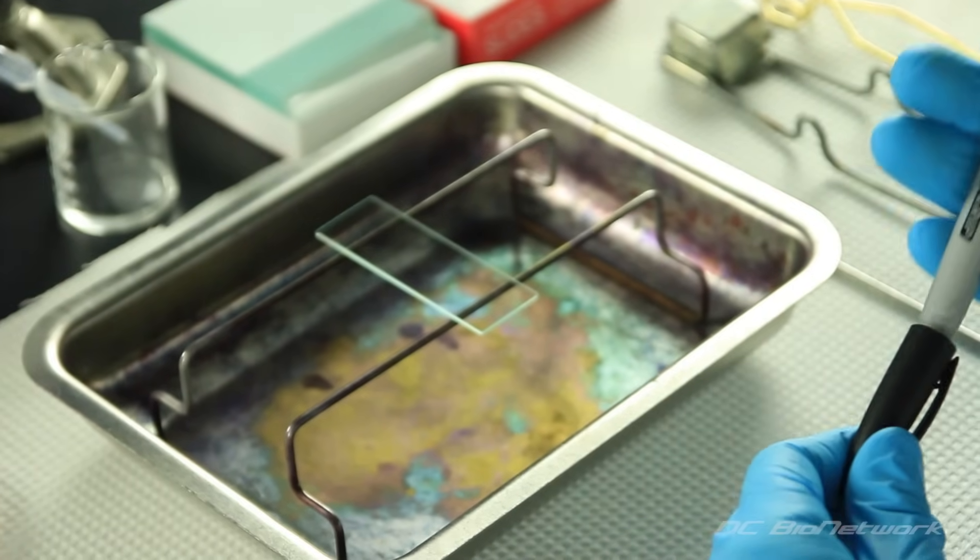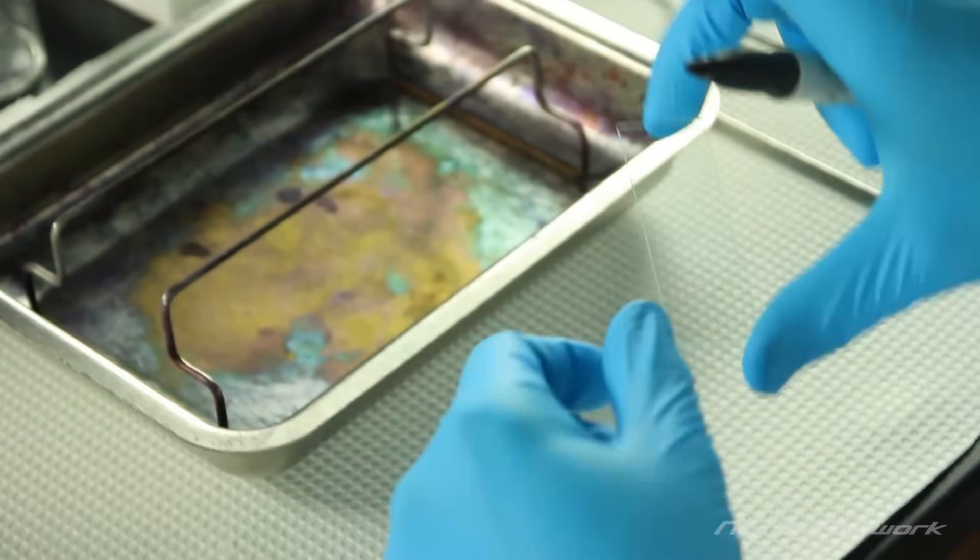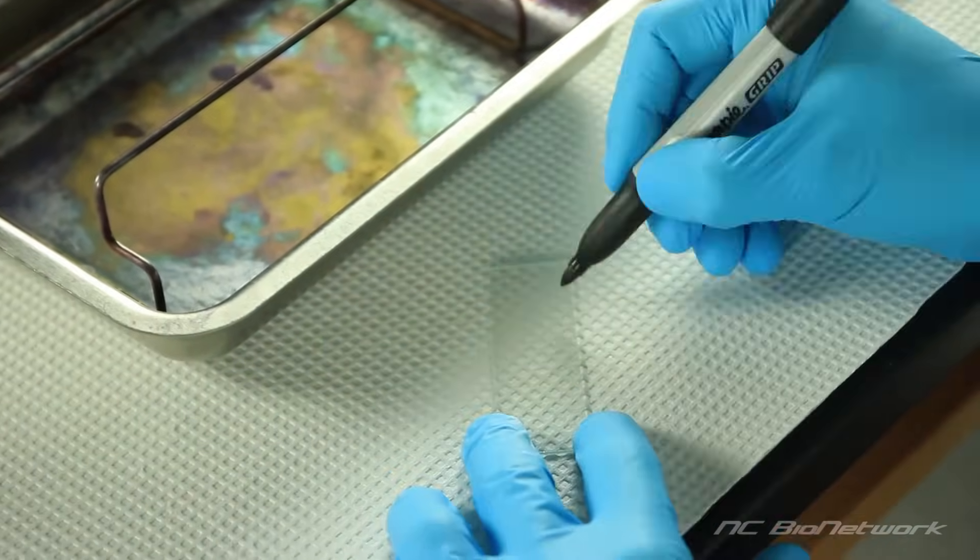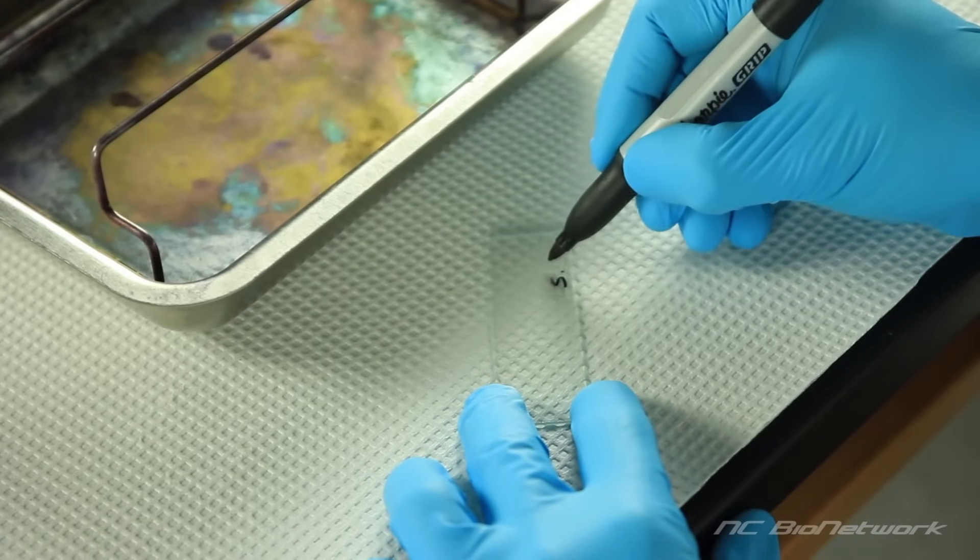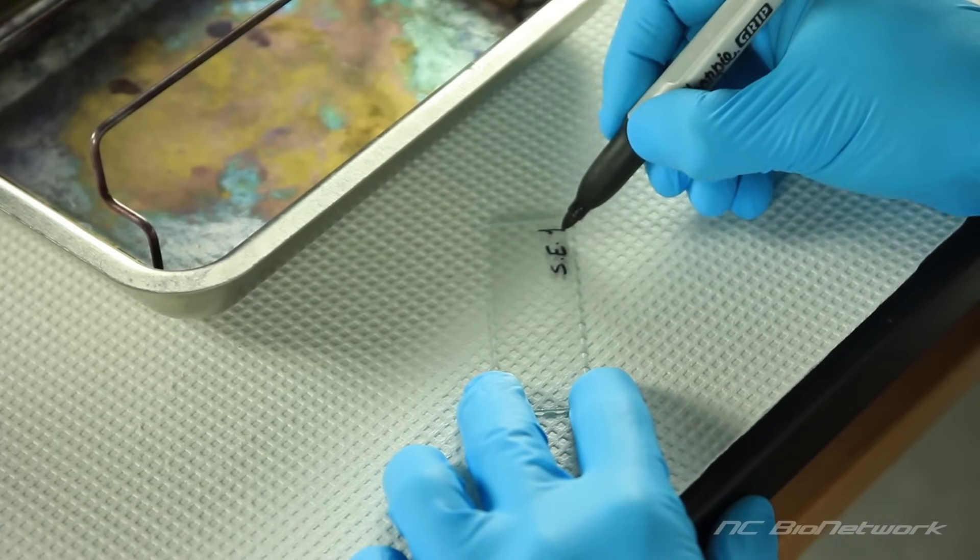Start with a clean microscope slide. Use a china marking pencil to label one end of the slide with the specimen name. Draw a circle in the center of the slide.